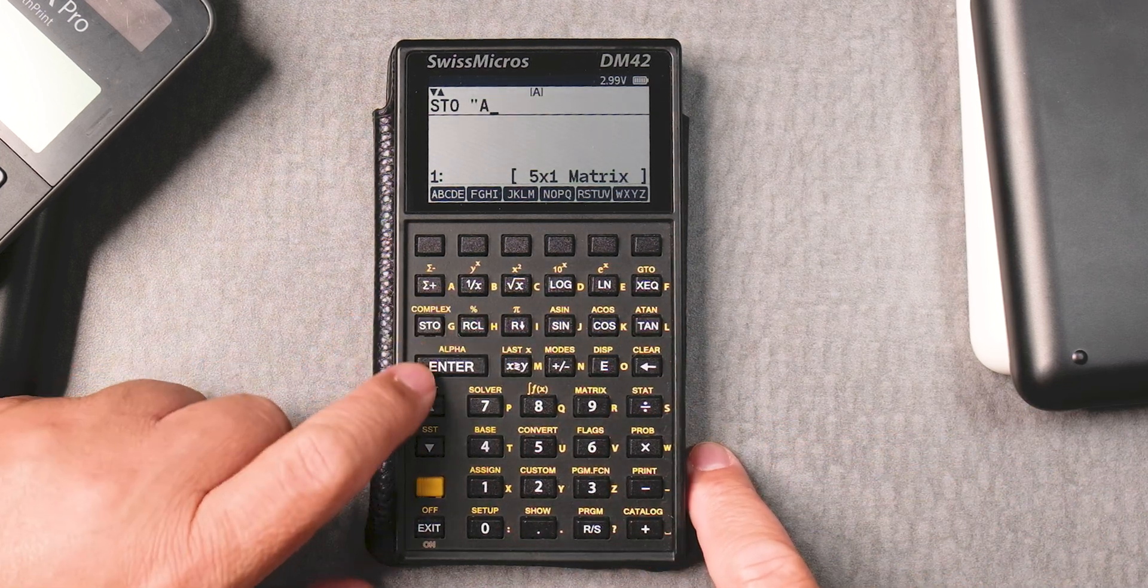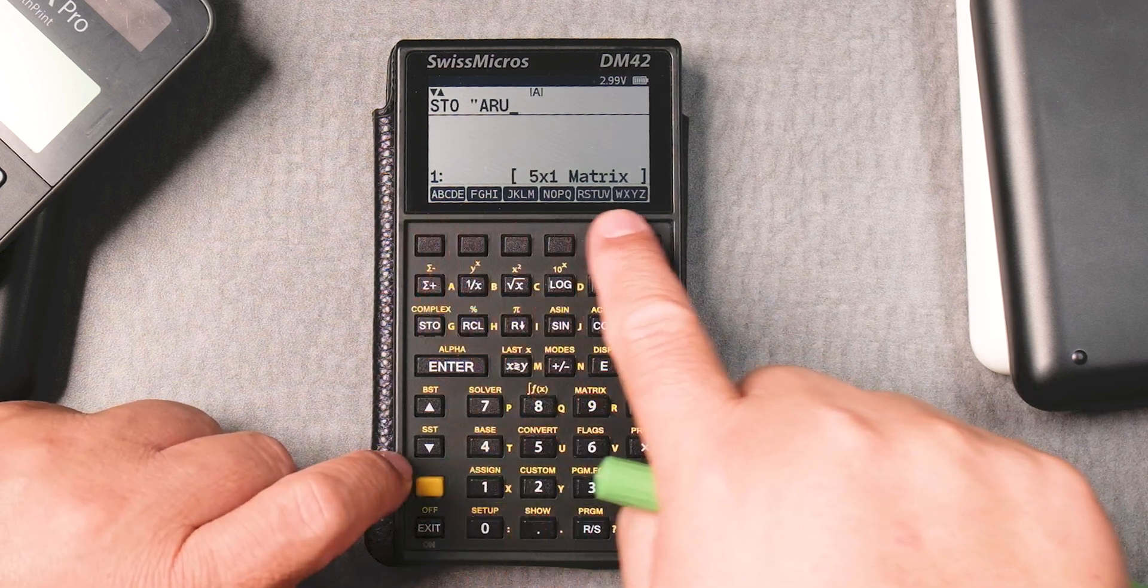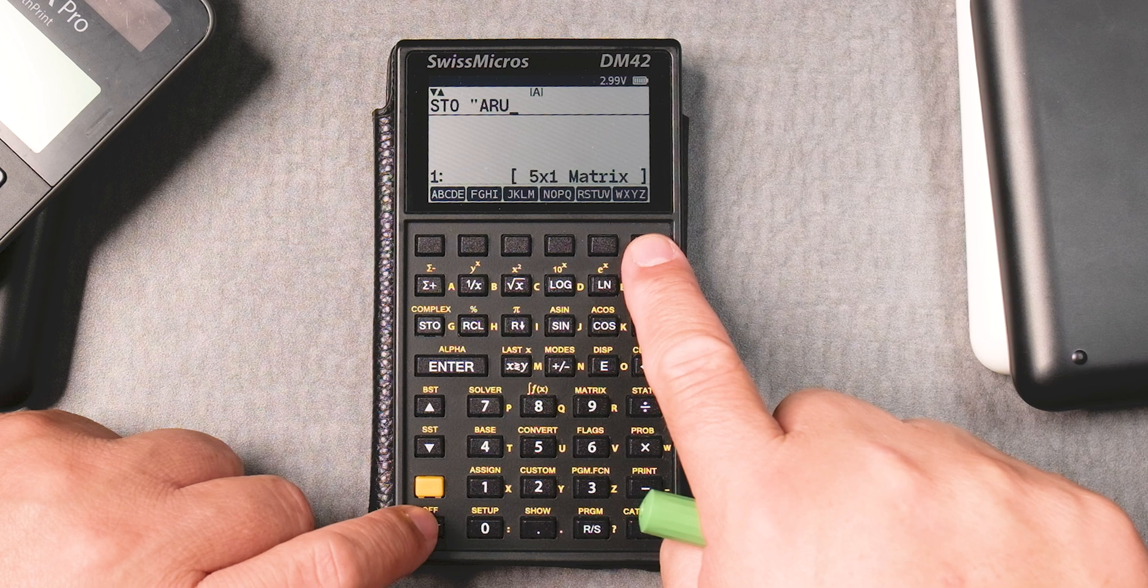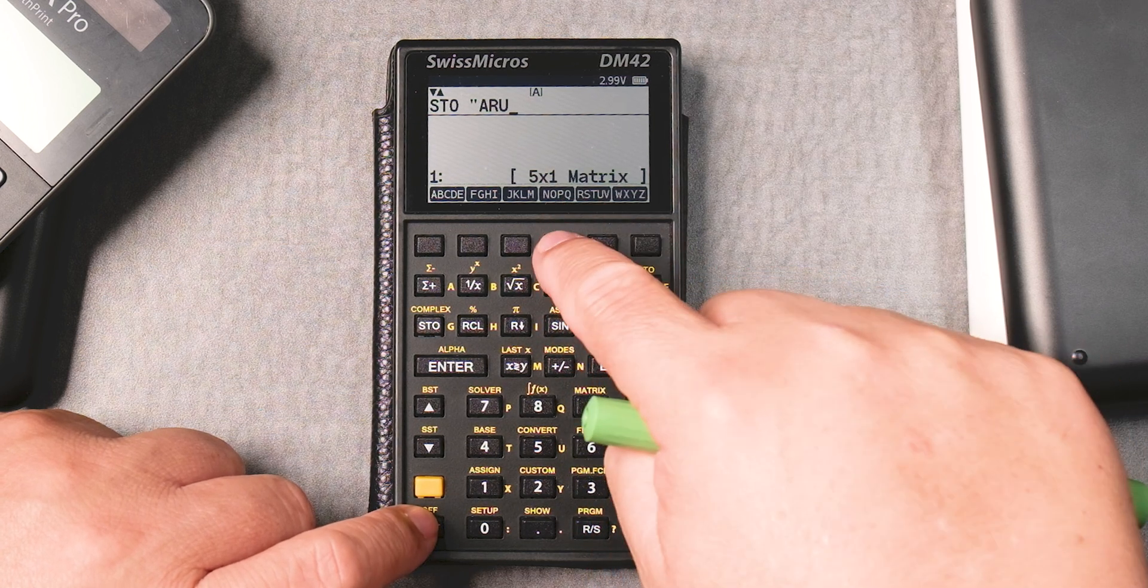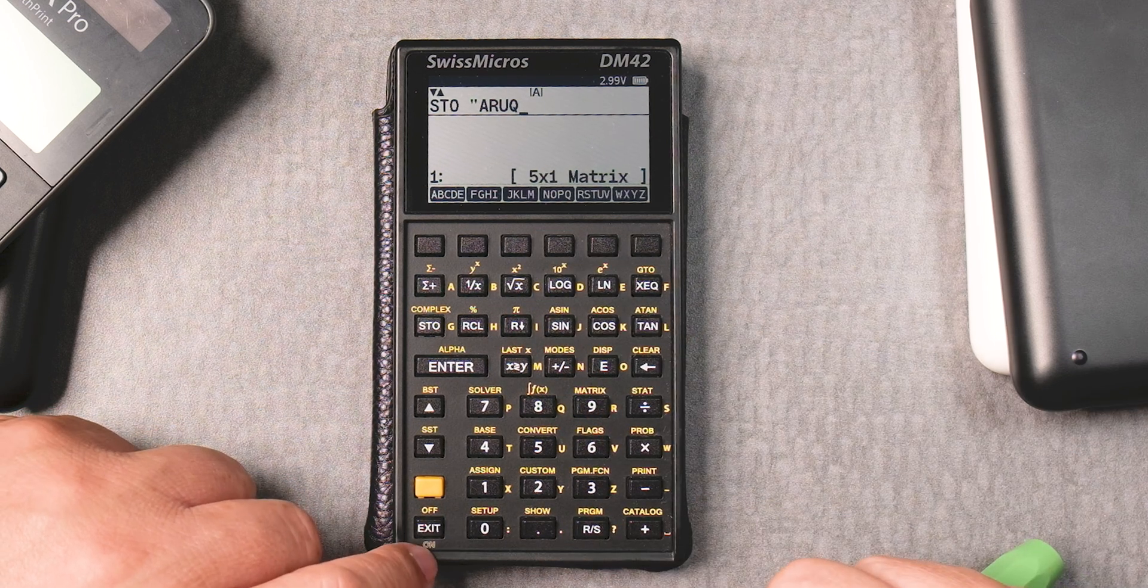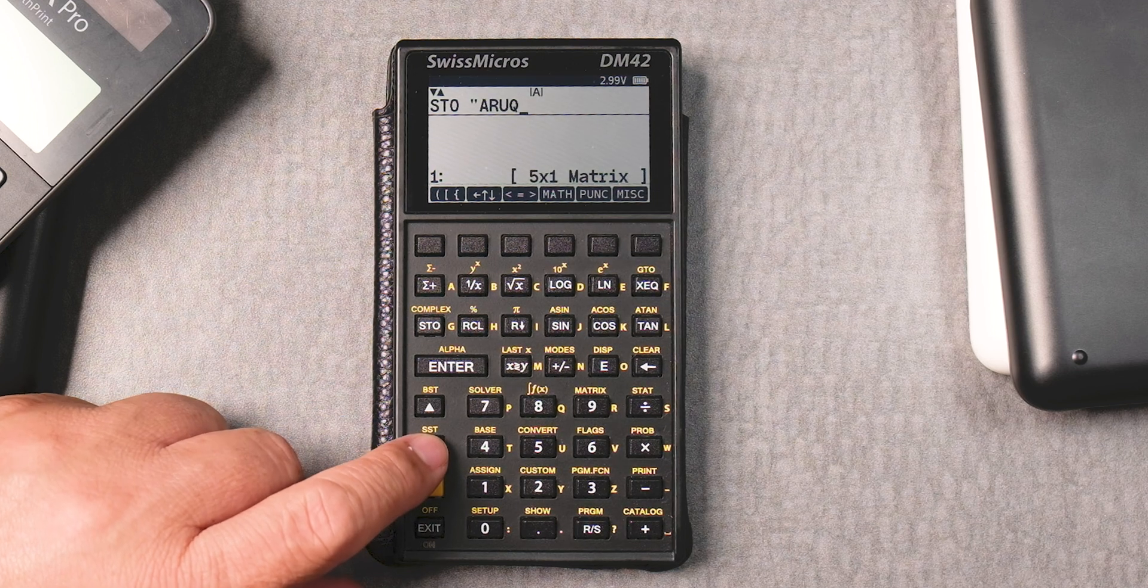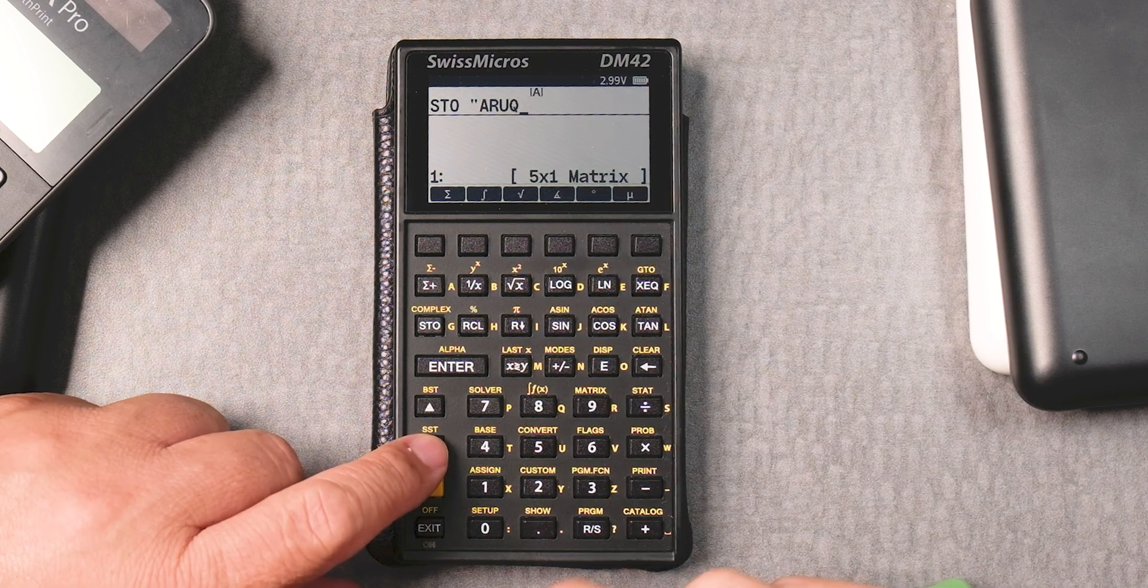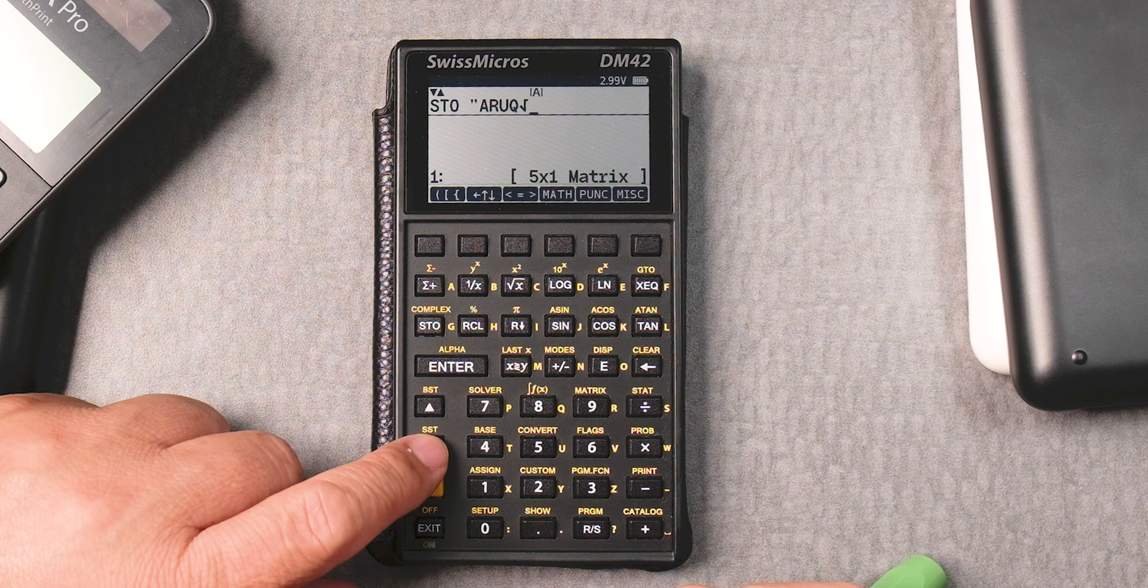So you should be able to use the letters here, right, A, S, R, and U. You can also use the soft keys, these function keys, and you can press like, let's say I wanted a Q, you can press this button and then Q. See that? And if you press this button down, you can get all the nice math type characters.